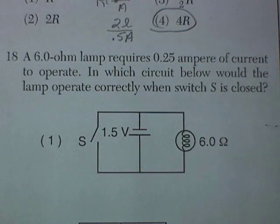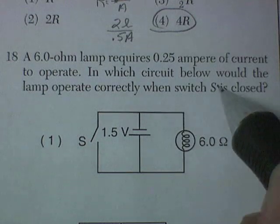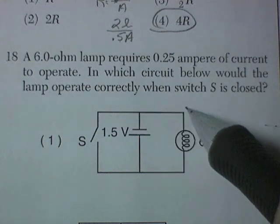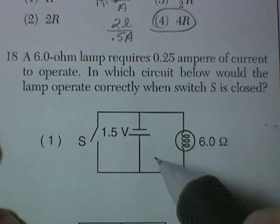Question number 18. There's a 6 ohm lamp, it requires 0.25A of current to operate. Which circuit below would the lamp operate correctly when the switch S is closed? Well, let's look at all of them.